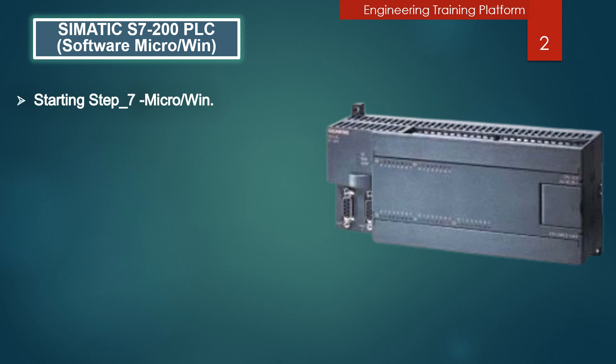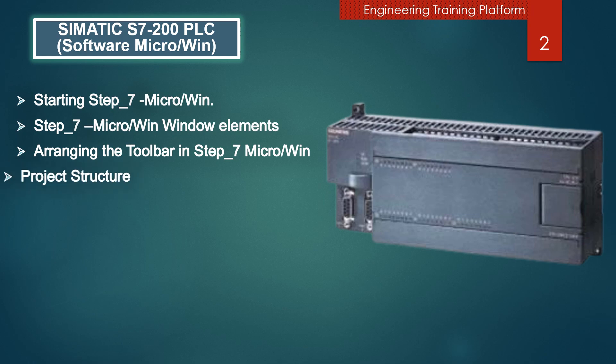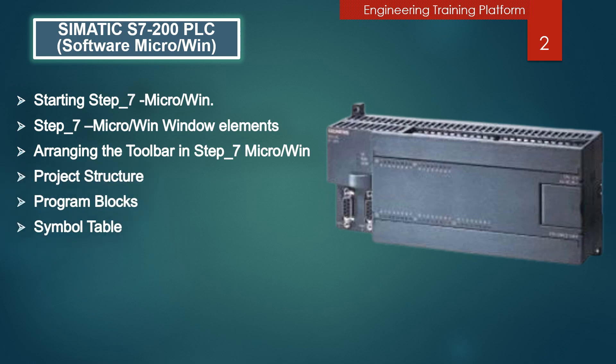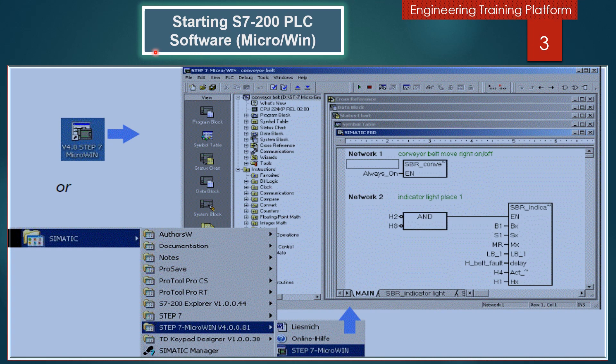From my previous presentation we already discussed about S7-200 software Micro WIN, and in this presentation we will continue for the further steps. We will cover the following topics: how to start Step 7 Micro WIN, windows elements, arranging the toolbar, project structure, program blocks, symbol tables, and status chart.